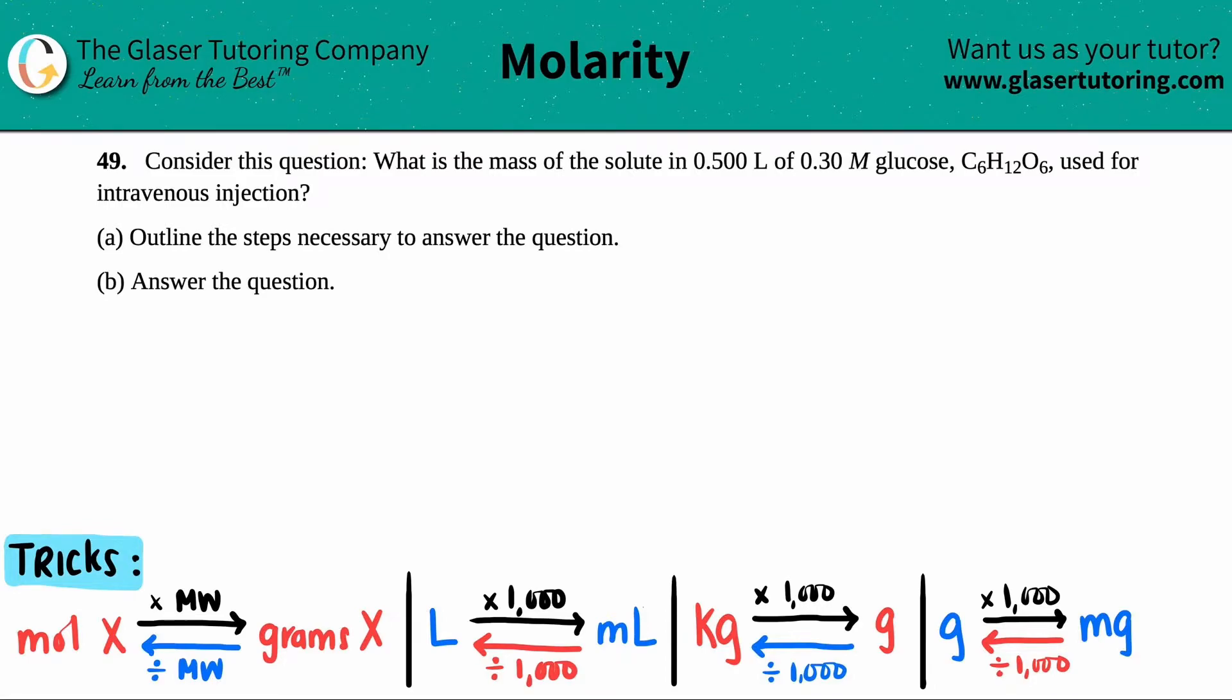Number 49, consider this question. What is the mass of a solute in 0.55 liters of 0.30 molarity glucose, which is C6H12O6, used for an intravenous injection?